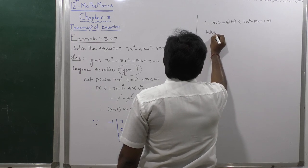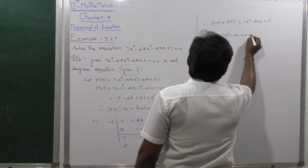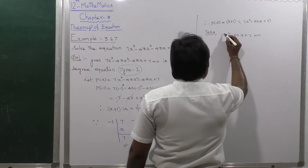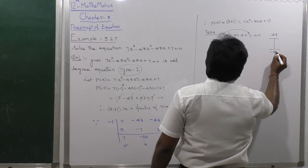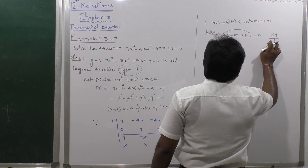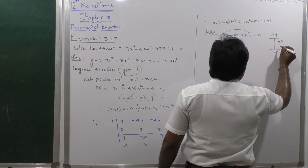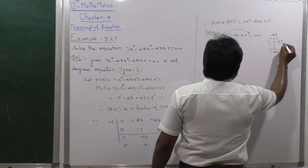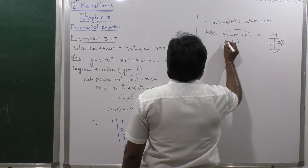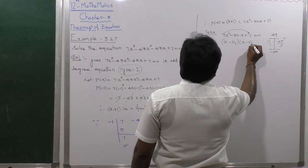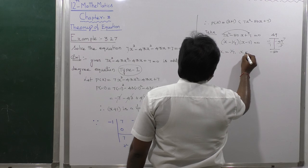Now solve the quadratic 7x² - 50x + 7 = 0. The product of roots is 49 and the sum is 50. Both values are negative, giving factors -7 and -7. So (x - 1/7)(x - 7) = 0, which gives x = 1/7 and x = 7.